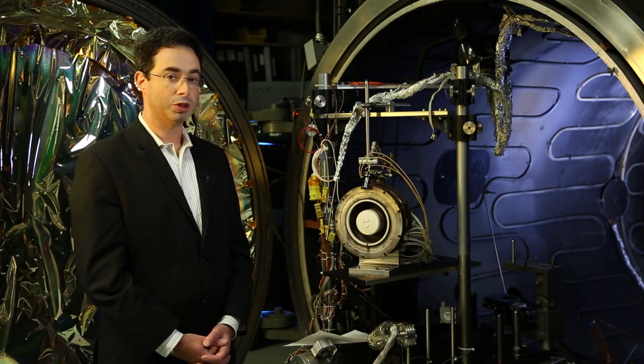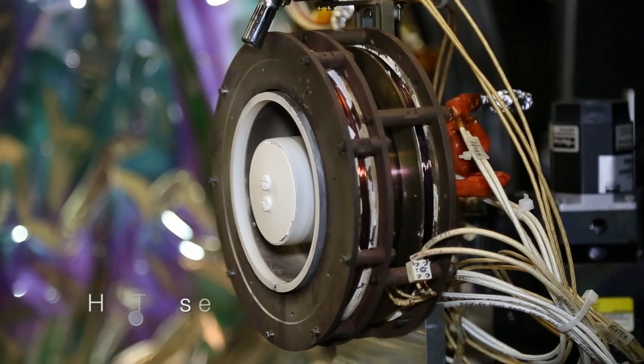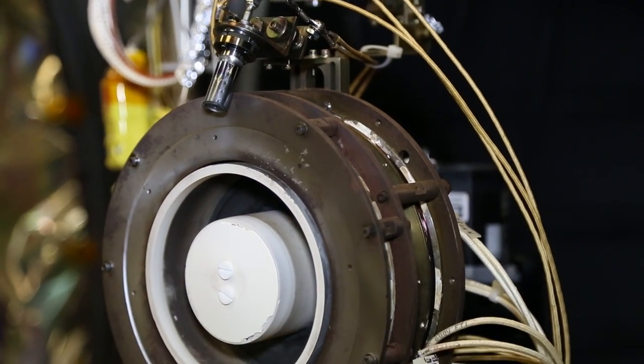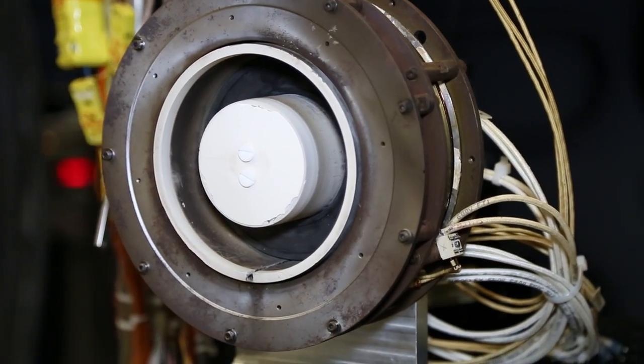An example of an electric propulsion device is shown right here. This is called a hall thruster. This is about a 2 kilowatt laboratory model of a hall thruster.